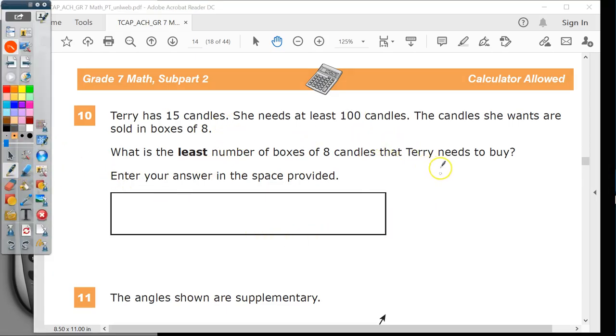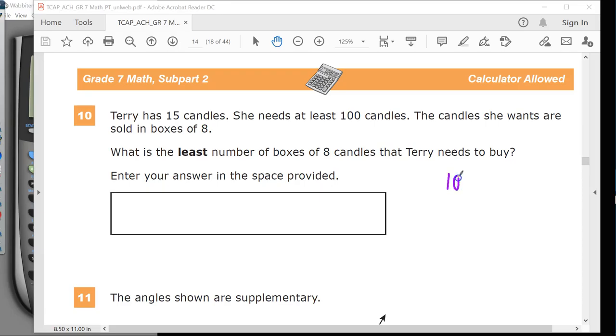So, first thing we're going to do is, we have 100 candles that we need. We're going to make an adjustment for the fact that Terry already has 15 candles. Before I go any deeper into this, what a lot of mathy people will want you to do here is set up an equation. So, this is what the equation looks like, in case you're wondering. I need boxes of 8, so 8 per number of boxes, and we'll make x the number of boxes, plus 15 candles has to be greater than or equal to 100.